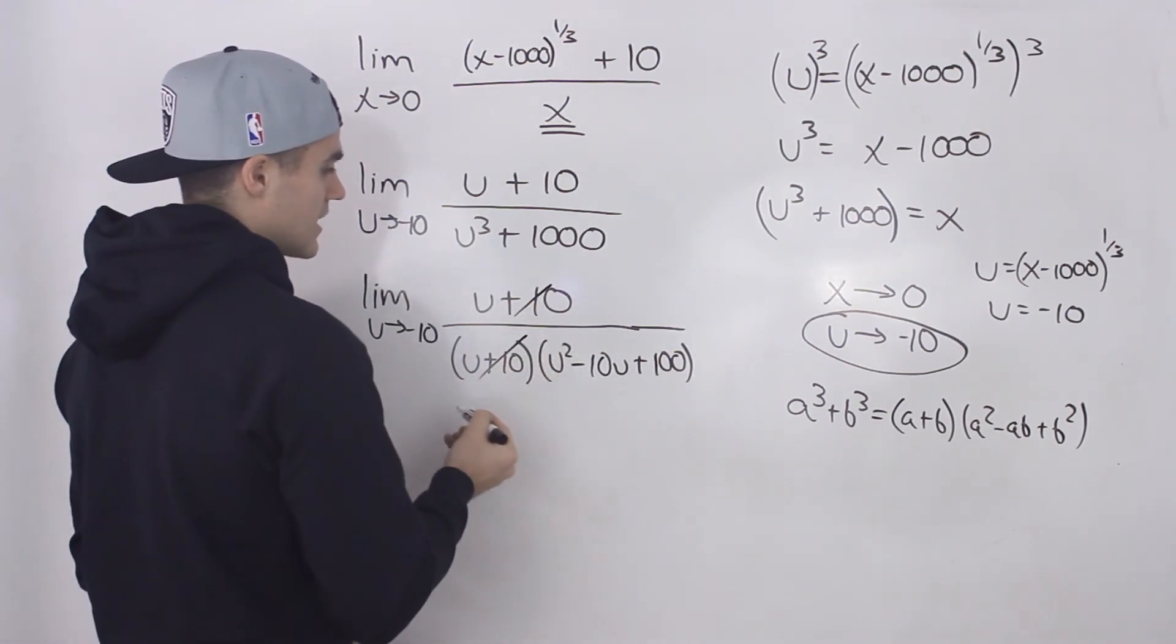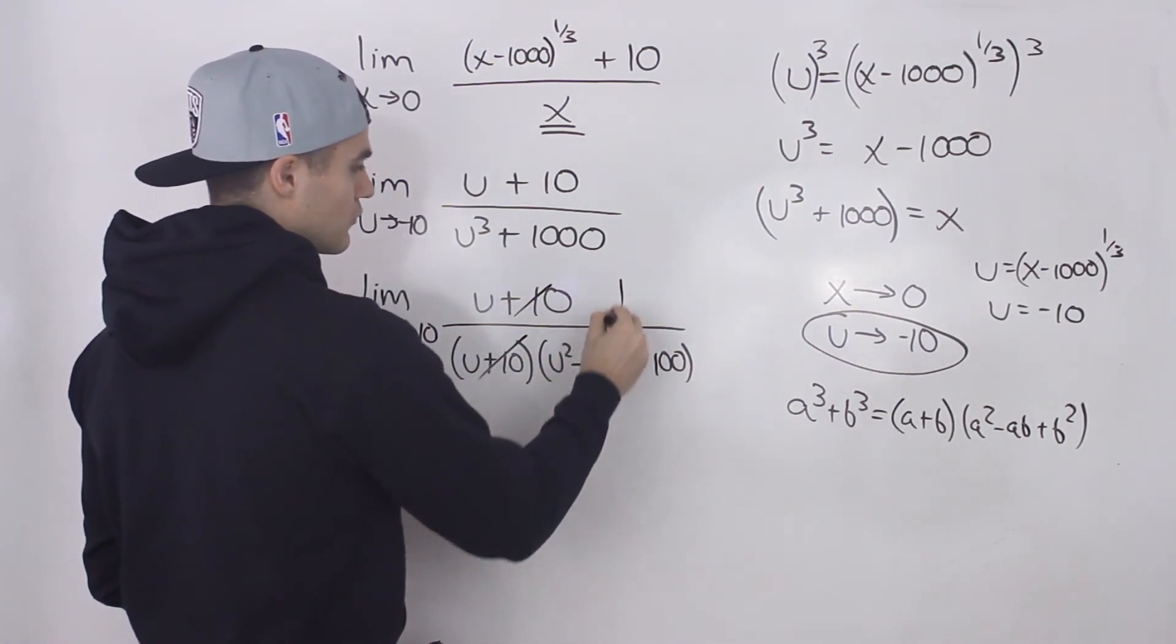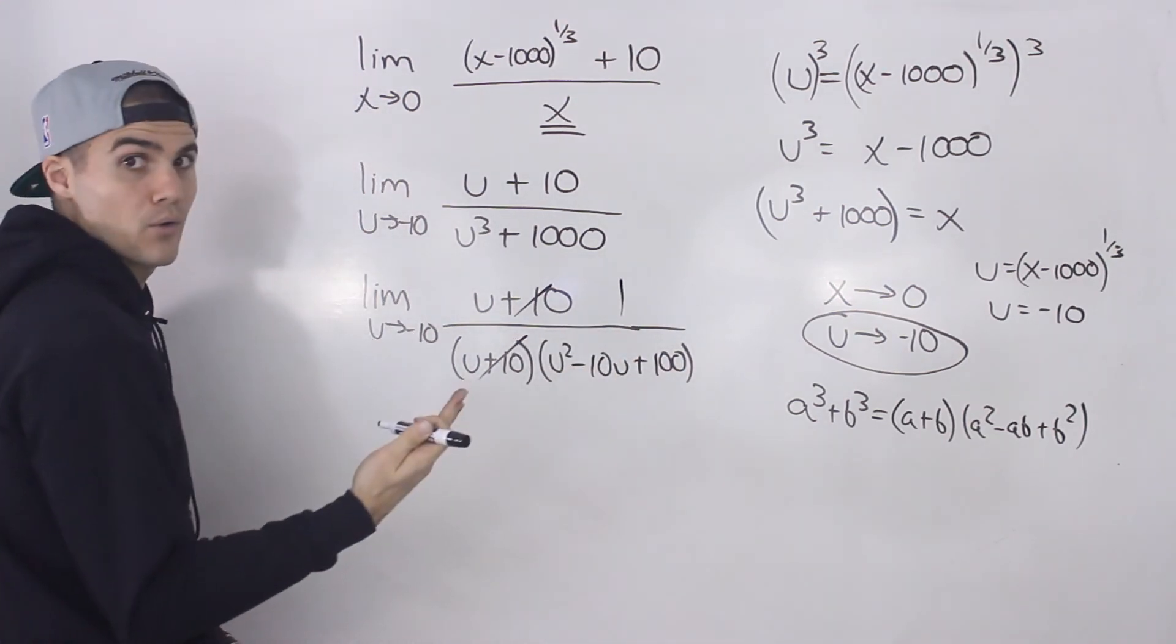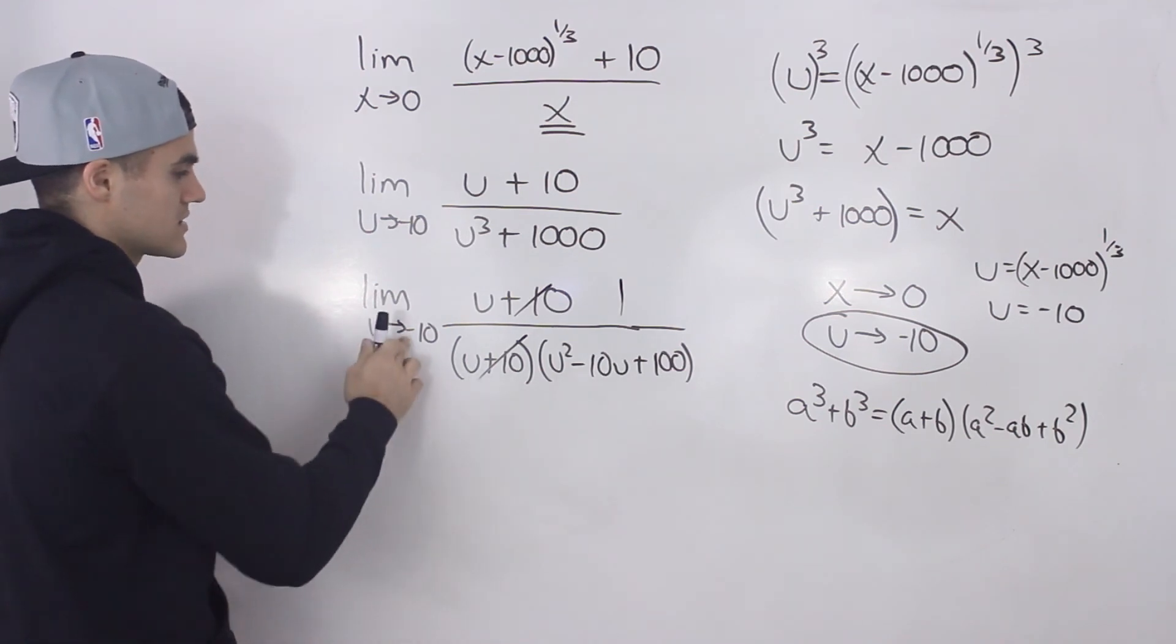And now notice that the u plus 10 terms will cancel out. So we'll be left with 1 over u squared minus 10u plus 100. And now we can make a direct substitution.